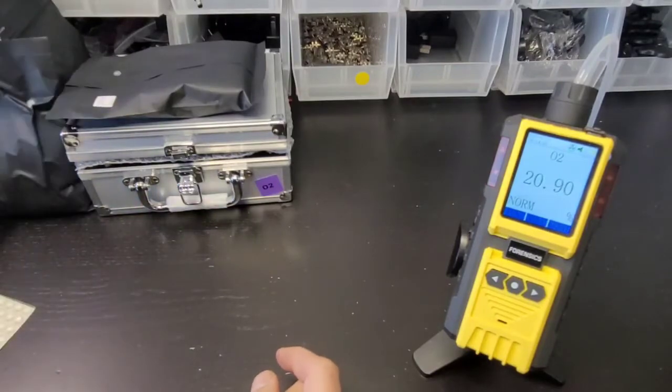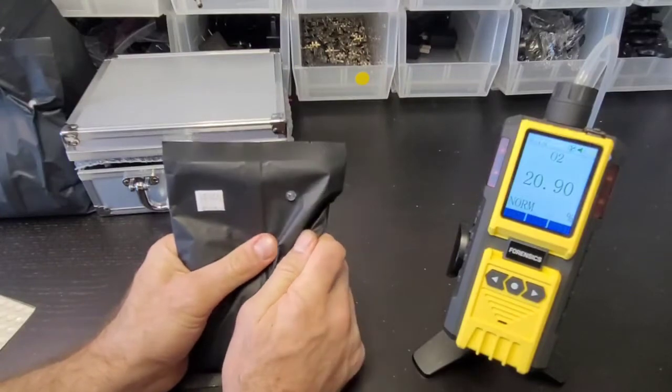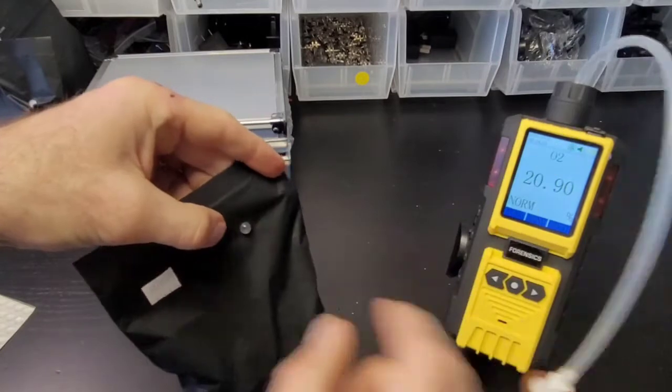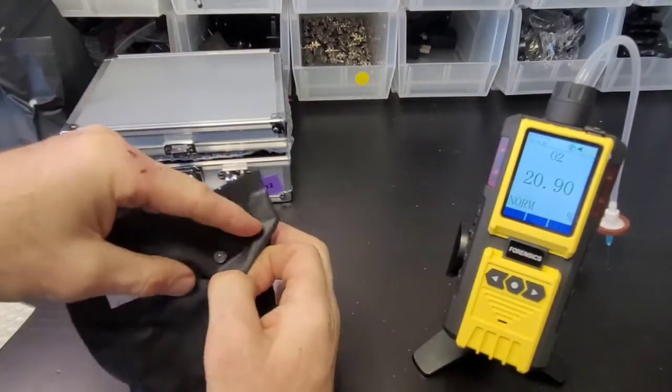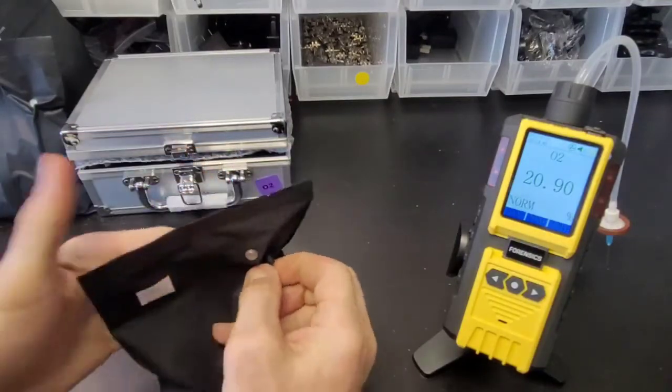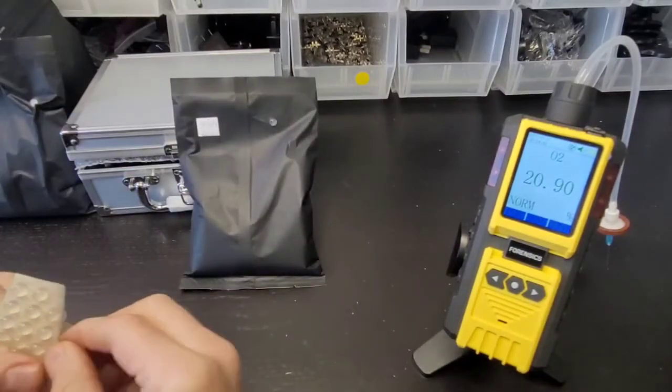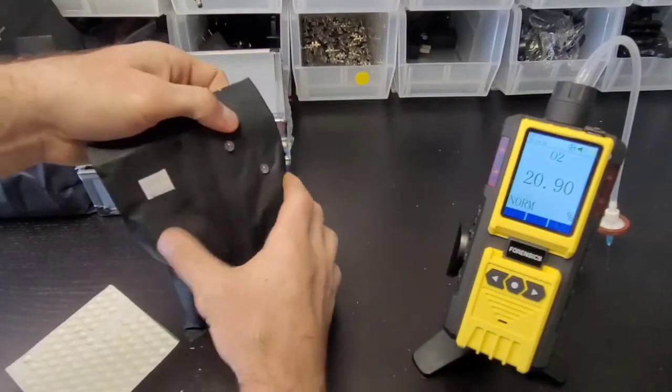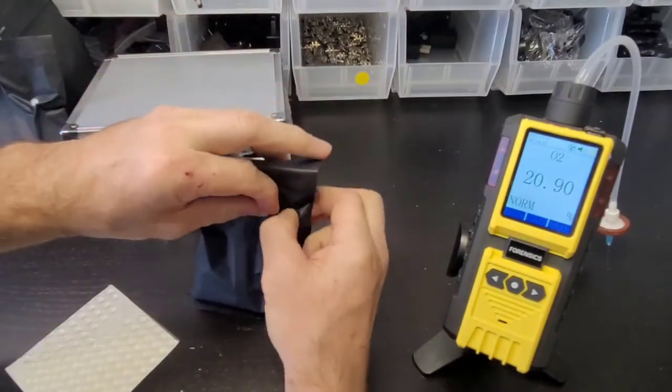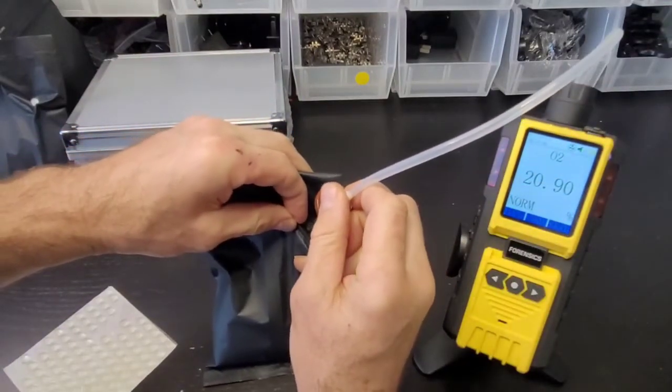The last package here has a little bit more headspace, so this should be a bit easier than the prior pack. I'm going to pop another septa right on this corner here - seems to be where the interface between the coffee and the headspace is. That will make it easier for me to pop the needle through.